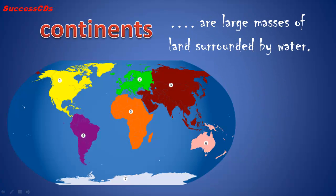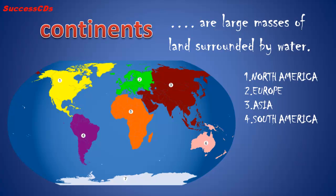We all know that continents are large masses of land surrounded by water, and there are seven continents: North America, Europe, Asia, South America, Africa, Australia, and Antarctica.